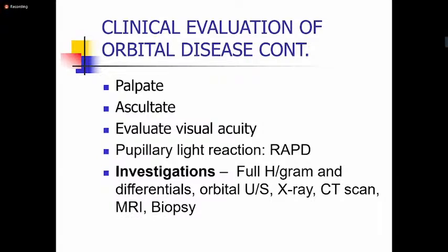Investigations will depend on what you are suspecting, but basically you need to do a full hemogram and differentials. An orbital ultrasound, X-ray, and most importantly a CT scan may be of value. CT scan is good because it can delineate lesions in bony cavities like the orbit. MRI is preferable in young children below two years to avoid radiation exposure. Ultimately, a biopsy gives the definitive diagnosis in case of an orbital tumor.